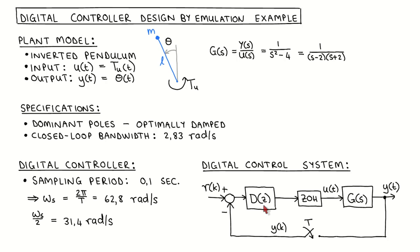For this example, we are going to use a sampling period of 0.1 seconds. With a sampling period of 0.1 seconds, the sampling frequency is 62.8 radians per second. This means that the Nyquist frequency is 31.4 radians per second, which is approximately 10 times higher than the closed loop bandwidth of the control system. With the chosen sampling frequency, we can therefore represent all the frequency components within the closed loop bandwidth. However, since the Nyquist frequency is relatively close to the closed loop bandwidth, we expect the approximations made in the controller discretizations not to be very accurate.